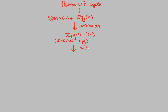That zygote will eventually turn into, through a bunch of mitotic divisions — through the process of mitosis specifically — the multicellular organism that is you. So you start off as just sperm and egg. Those two combine under the process of fertilization to give a diploid zygote, which undergoes mitosis many, many times to finally form the advanced and beautiful multicellular organism that is a human.